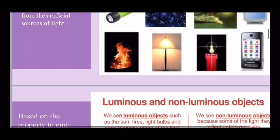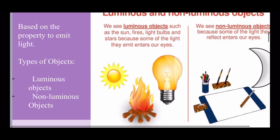Let us move on. Based on the property to emit light, we have classified objects into two categories: luminous and non-luminous objects. An object that gives out its own light is called a luminous object. For example, the sun, the stars, a burning candle, firefly, fire, and so on.